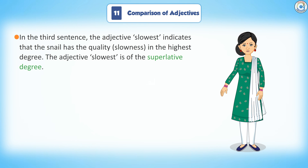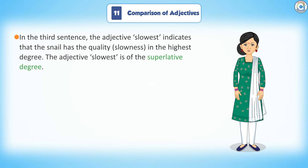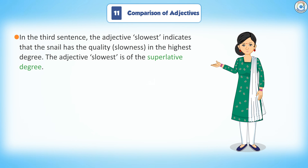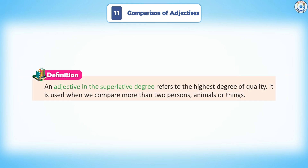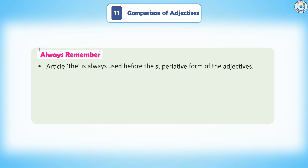In the third sentence, the adjective 'slowest' indicates that the snail has the quality of slowness in the highest degree. The adjective 'slowest' is of the superlative degree. Definition: An adjective in the superlative degree refers to the highest degree of quality. It is used when we compare more than two persons, animals or things. Always remember: the article 'the' is always used before the superlative form of adjectives.